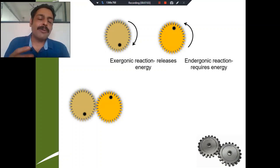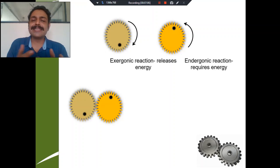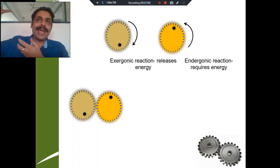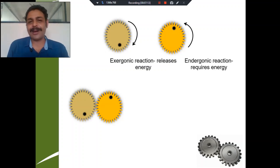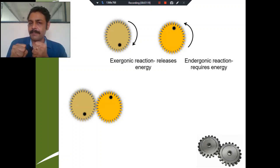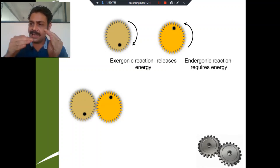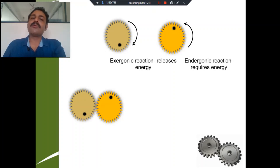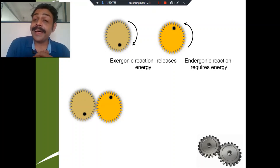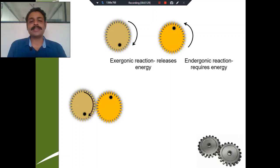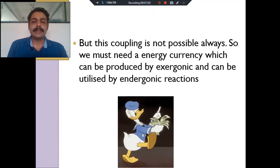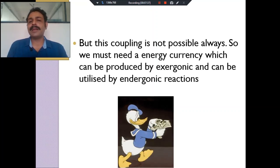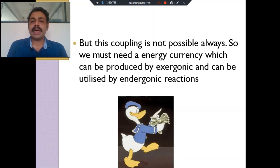That means we would have to eat 24/7. For this — to get energy from exergonic reactions, save that energy, and utilize it for endergonic reactions — we need a currency. So what is that currency called? The coupling is not possible directly, so the energy liberated from exergonic reactions is used to produce ATP.